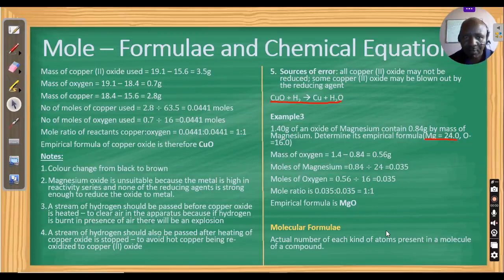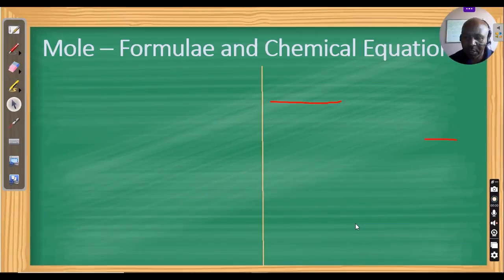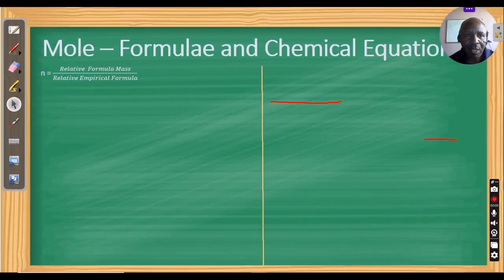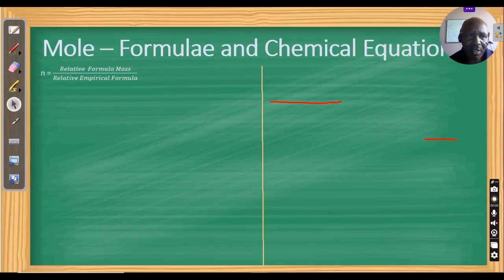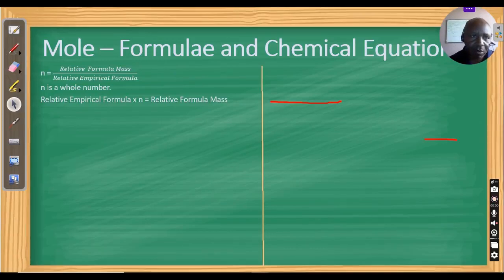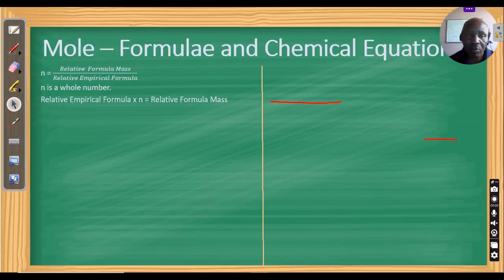There is a relationship between relative formula mass and relative empirical formula mass. N is the number used to convert an empirical formula into a molecular formula, calculated by dividing the relative formula mass by the relative empirical formula mass. N is always a whole number. So: relative empirical formula × N = relative formula mass.